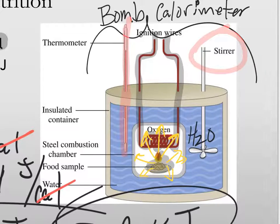The stir bar here is just going to make sure the water is equilibrated throughout the entire system. But based upon the change in temperature from beginning to end, you can calculate the amount of energy stored within that sample of food. That's exactly how calories for food are determined.